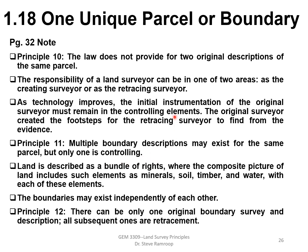Principle 10: Multiple boundary descriptions may exist for the same parcel, but only one is controlling. This is where you will hear about the 'pincushion effect,' where various pins and monuments are placed at one corner. Surveyors should rely on past surveyors' work and not add to a multitude of monuments at one corner. Land is described as a bundle of rights where the composite picture includes minerals, soil, timber, and water — with each element, boundaries may exist independently of each other.